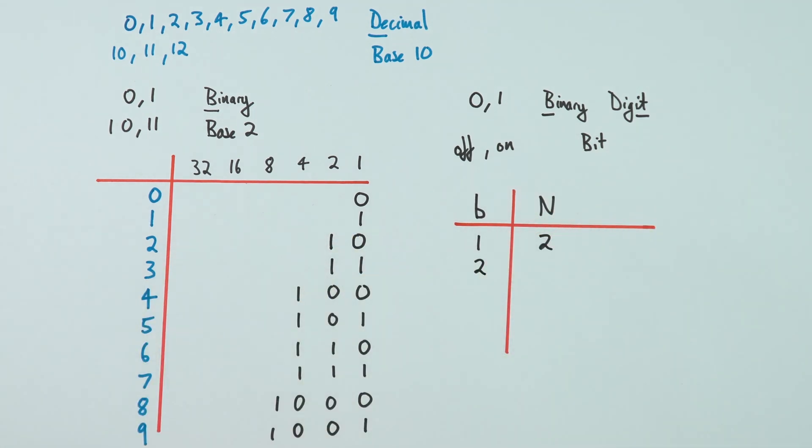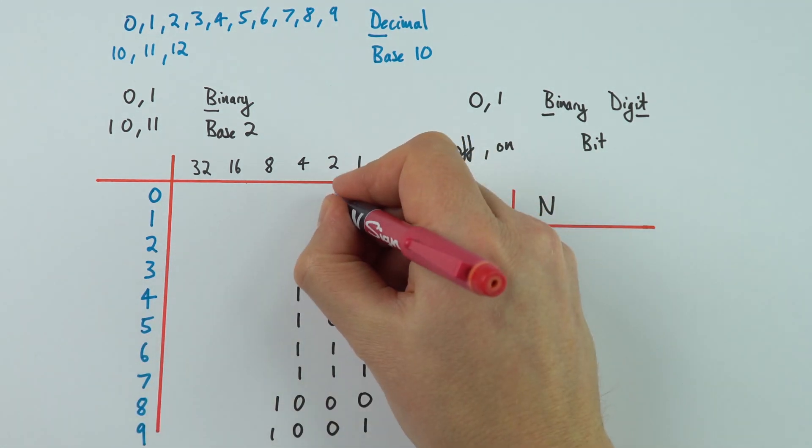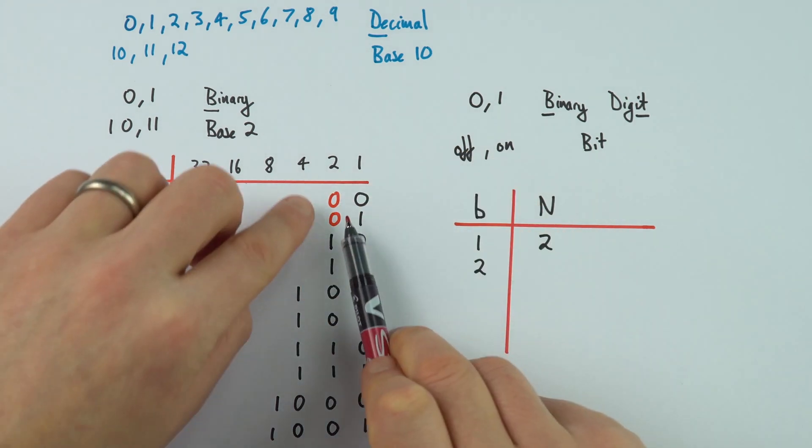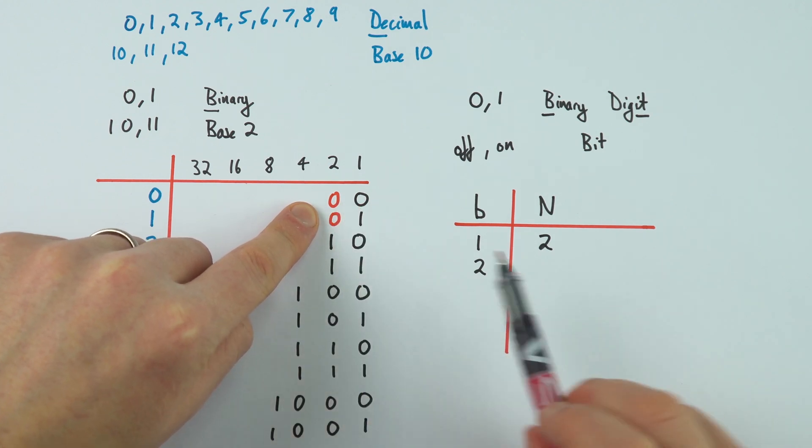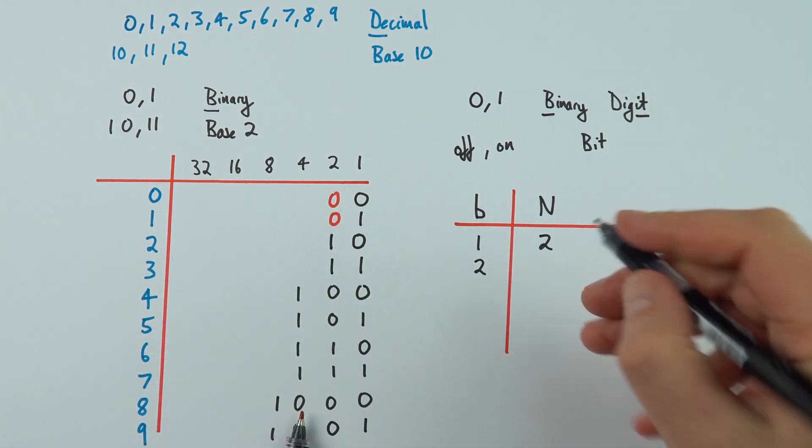If we had two bits, we can have 00, 01, 10, 11. So if we had two bits, that gives us four possible alternatives.